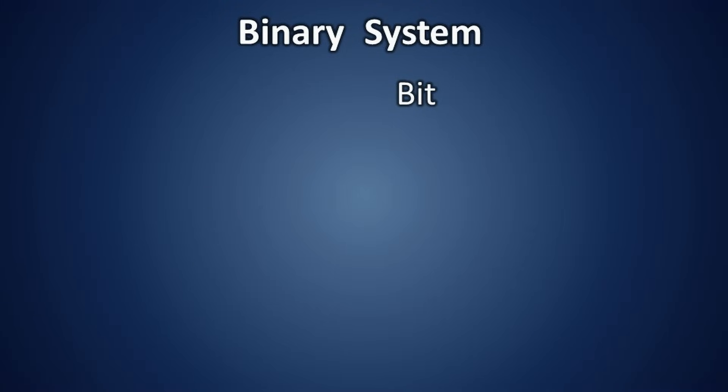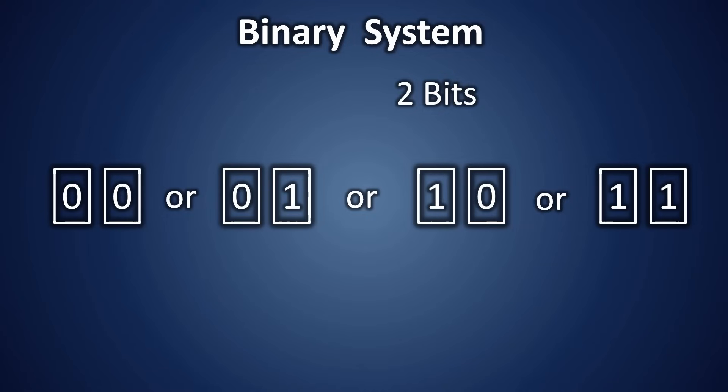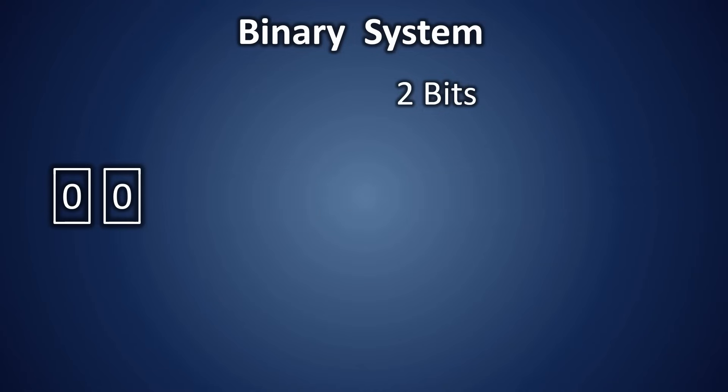In a binary system, a single digit is called a bit. Today, this is also referred to as a classical bit. A single classical bit can take only one of two possible states, either zero or one. With two classical bits, you can represent four possible combinations: zero zero, zero one, one zero, and one one. However, at any given moment, two bits can represent only one of these four states.